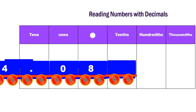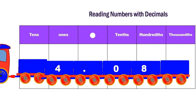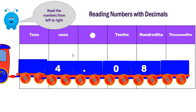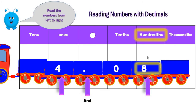Another number. From left to right, start with the whole number — it's four. Four and eight hundredths. There is no tenth here, that's why we put zero in the tenths place. Again, it's four and eight hundredths.